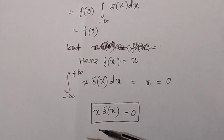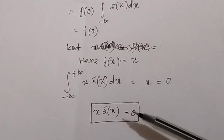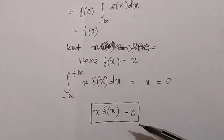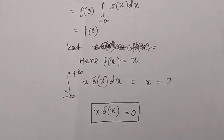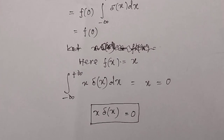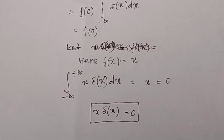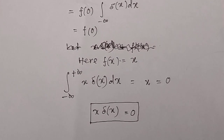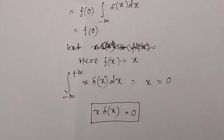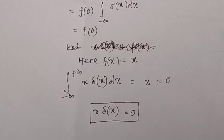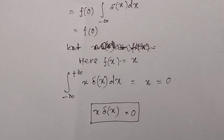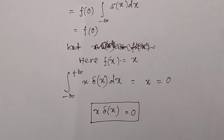That is why the property x·δ(x) = 0 holds. This is a very important property and we use it in solving many problems involving the Dirac delta function. Thank you.